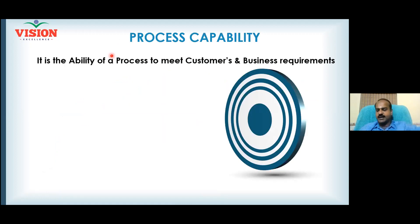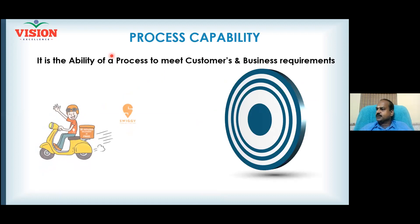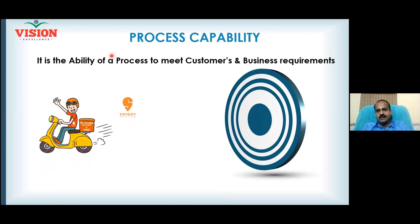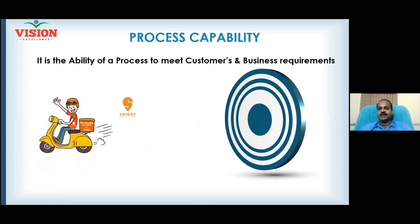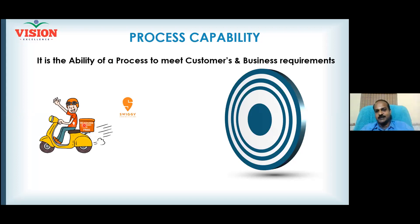There are certain failures happening right now, and we want to reduce them. In order to understand process capability or Sigma level, I'm bringing a very simple example. All of you know the food delivery companies called Swiggy or Zomato. Something is written on Swiggy's vehicle — they have declared 30-minute delivery, otherwise food is free. In a particular area, that commitment has been made.